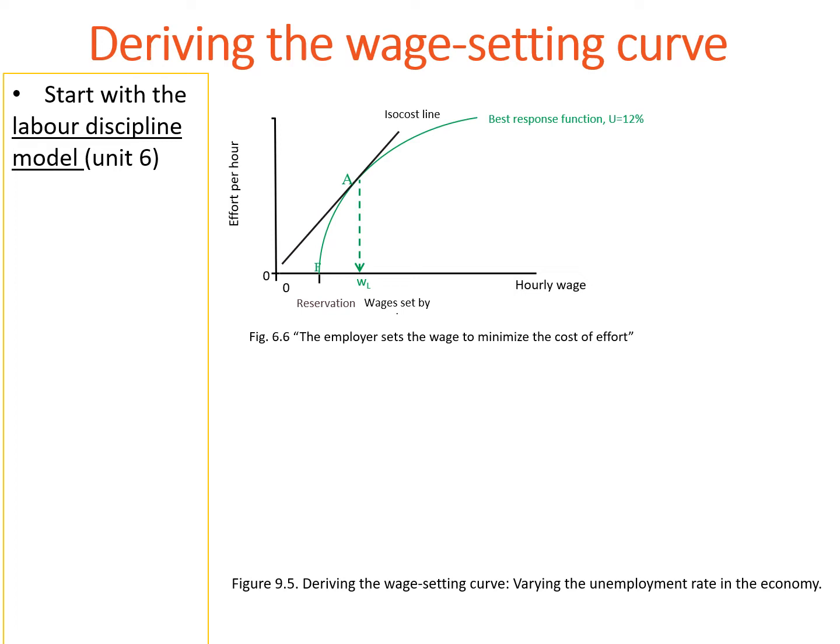However, employers can only decide on the nominal wage, but not on the employee's effort. So the employer is constrained by the employee's decision on how much effort they will place on the job. That means the employer has to pick some point on the worker's best response curve. The best the employer can do is to choose the ISO cost line that is tangent to the employee's best response function. At the tangency point, the marginal rate of substitution is equal to the marginal rate of transformation of higher wages into more effort.